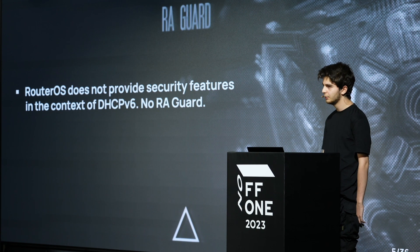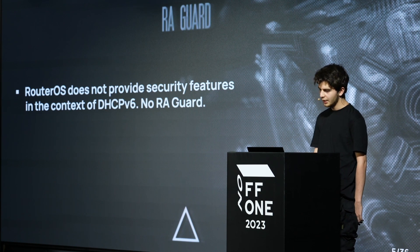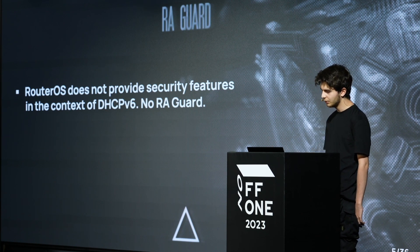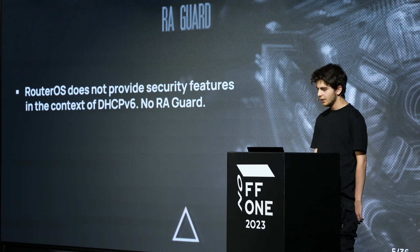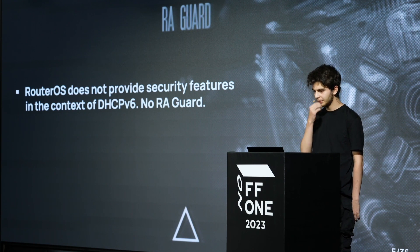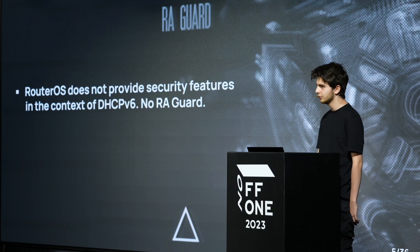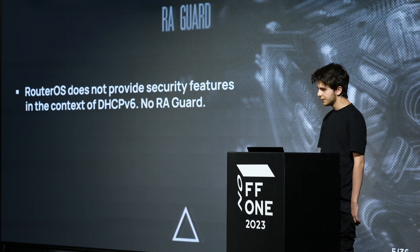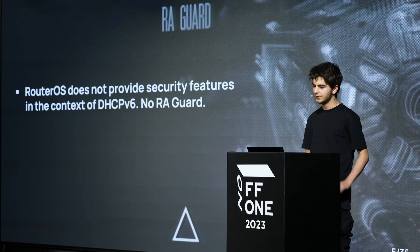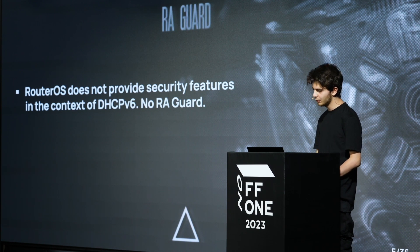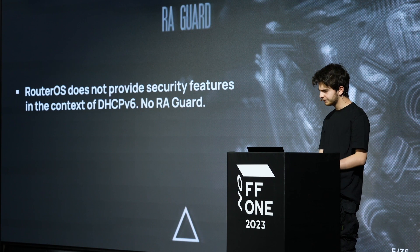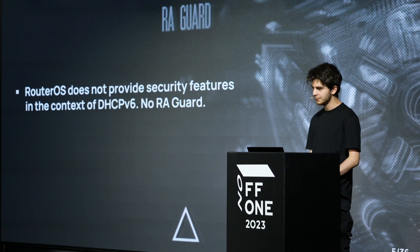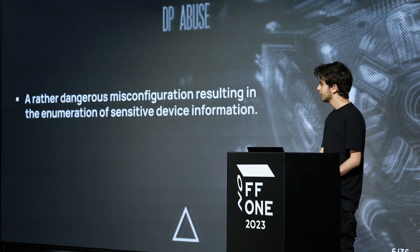RA guard is yet another function that prevents man-in-the-middle attacks by filtering out false Router Advertisement messages. This component is also missing in RouterOS. RA guard could prevent MitM attacks using tools that send out false RA messages, imposing itself as an IPv6 or DNS address, thus capturing data inside the link or organizing a man-in-the-middle attack.